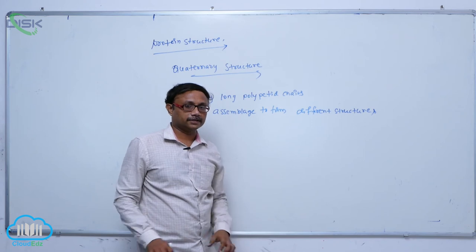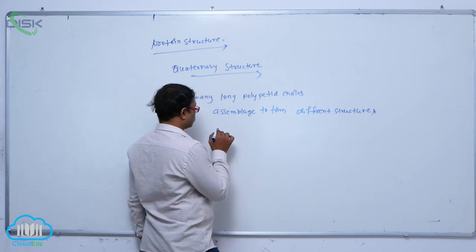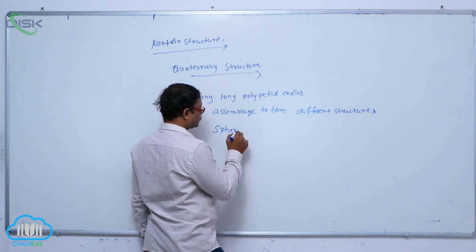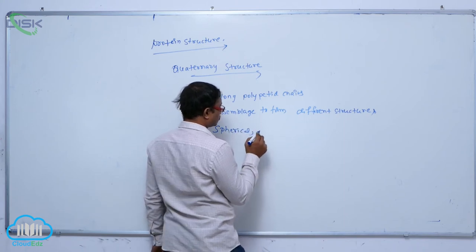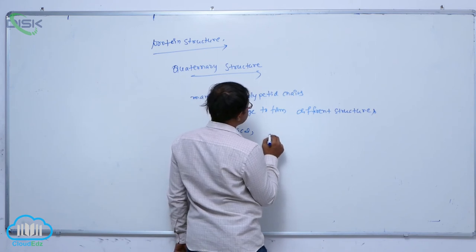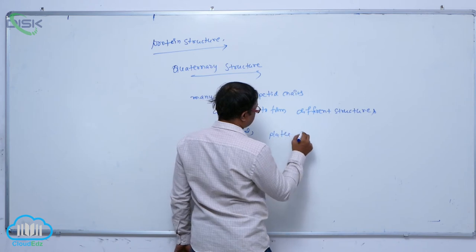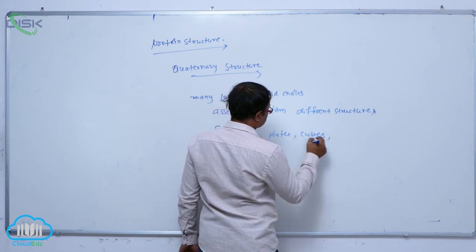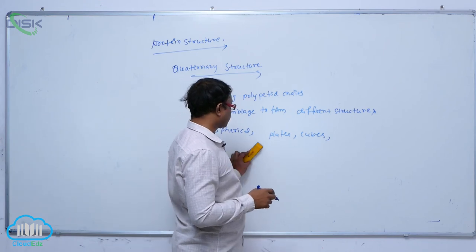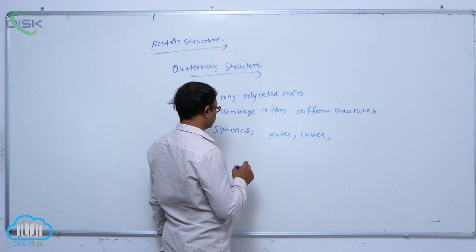Individual chains fold to form different structures. These include spiracles, plates, cubes, and tube-like structures arranged in spherical or plate-like arrangements.